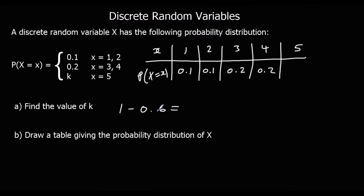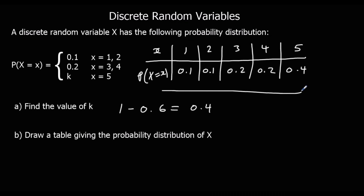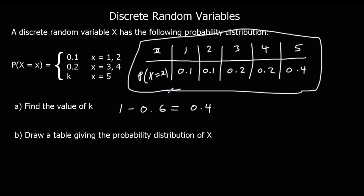So k must be 0.4, because all of the probabilities of the events have to add up to one whole. So there we have our probability distribution for x.